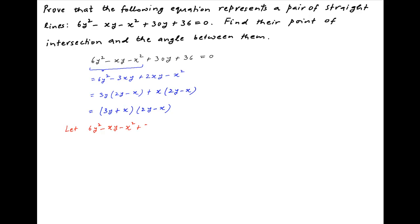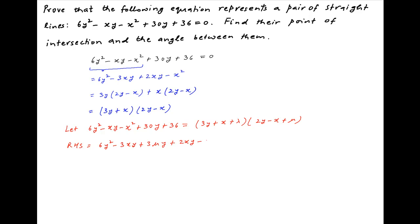Therefore, it is possible that the given equation 6y² - xy - x² + 30y + 36 can be written as the product of two terms (3y + x + λ) and (2y - x + μ). The right-hand side can be expanded as 6y² - 3xy + 3μy + 2xy - x² + μx + 2λy - λx + λμ.